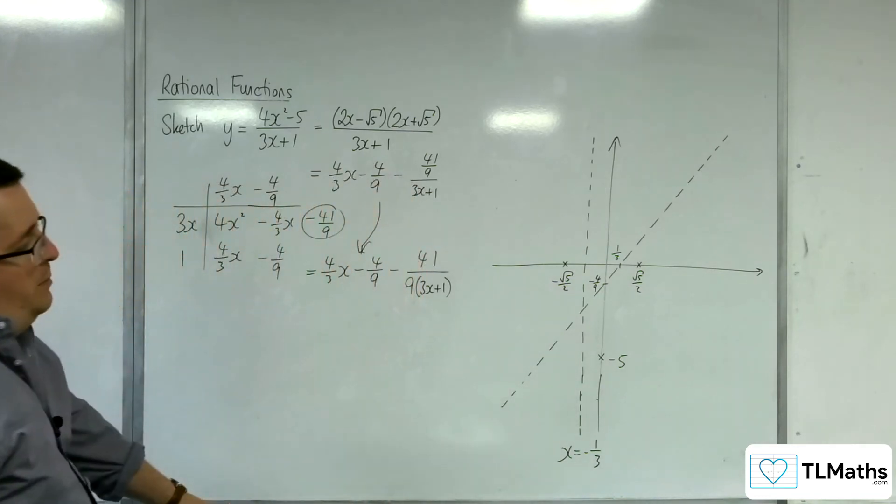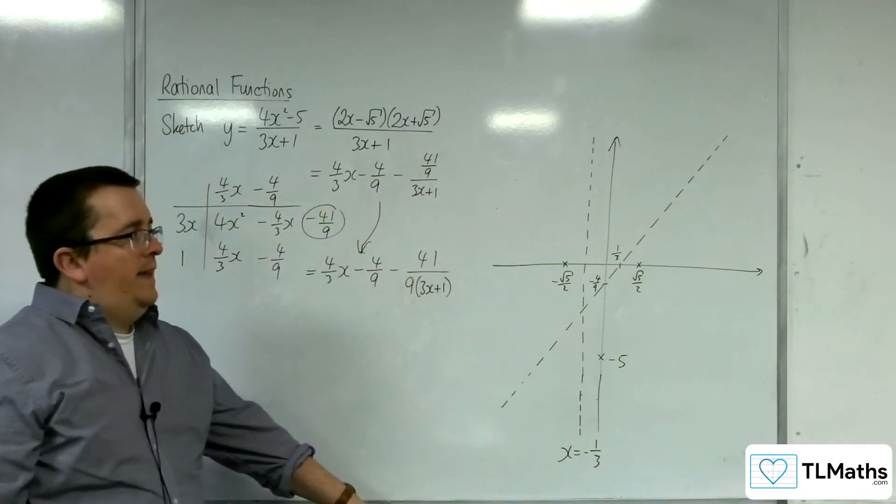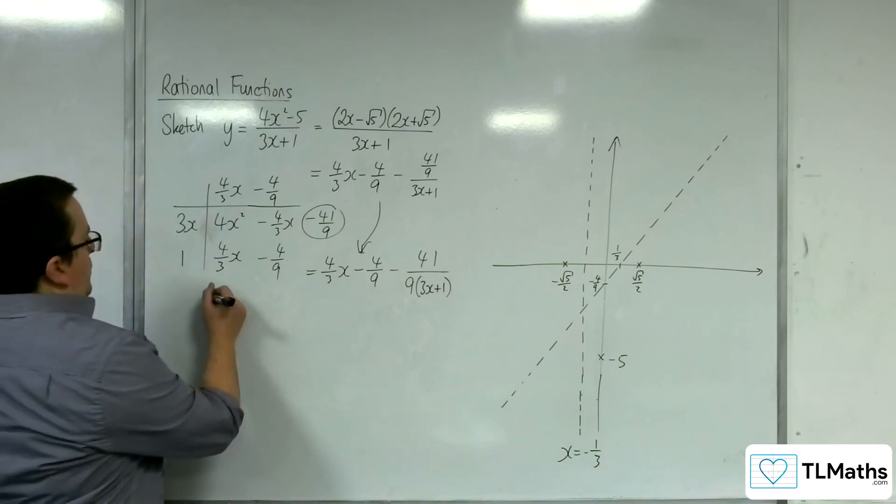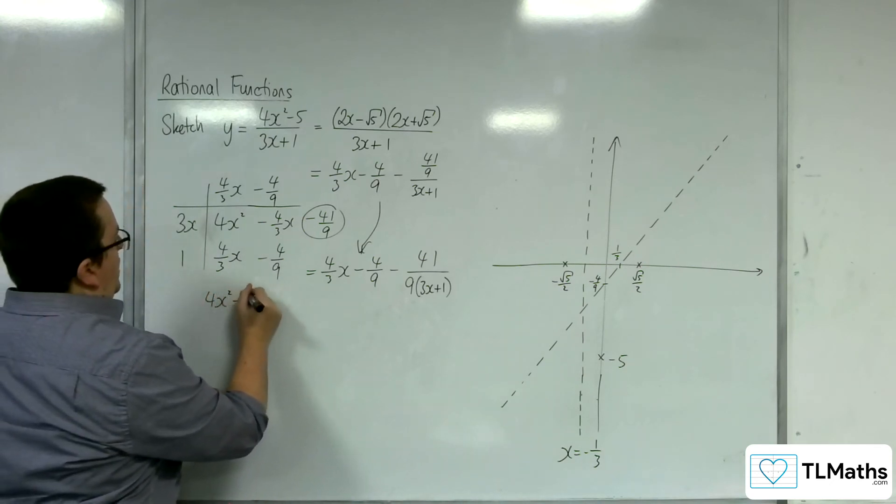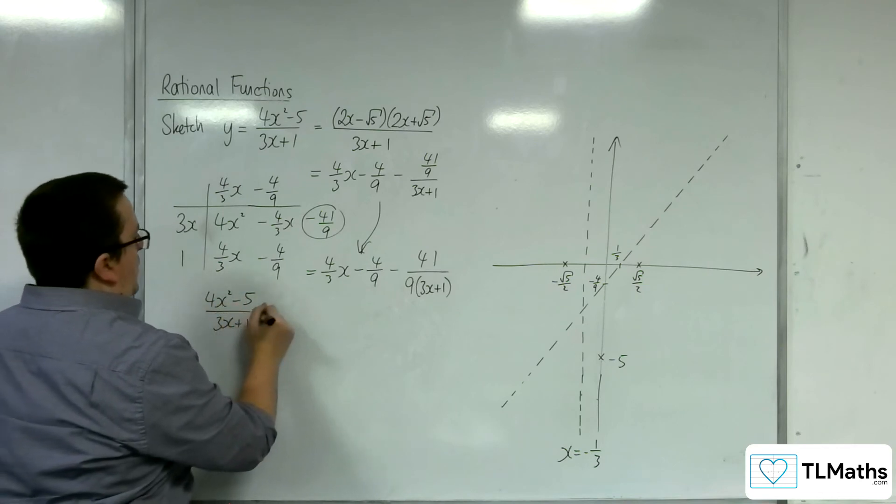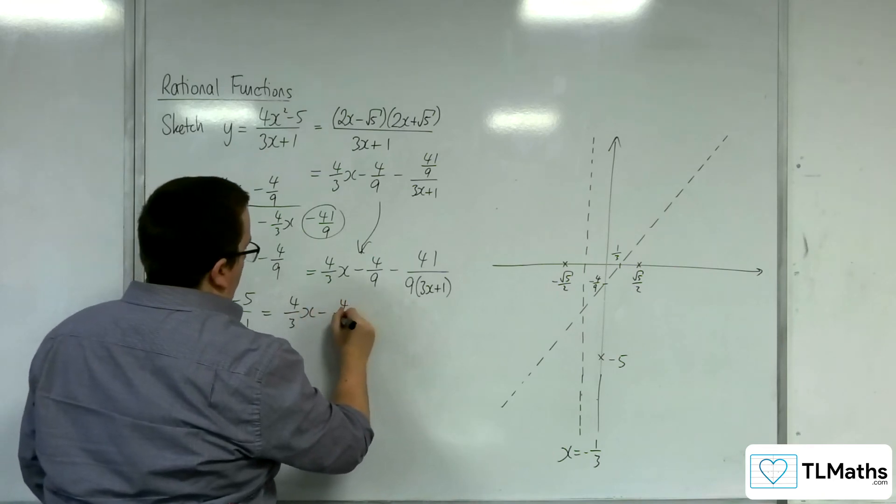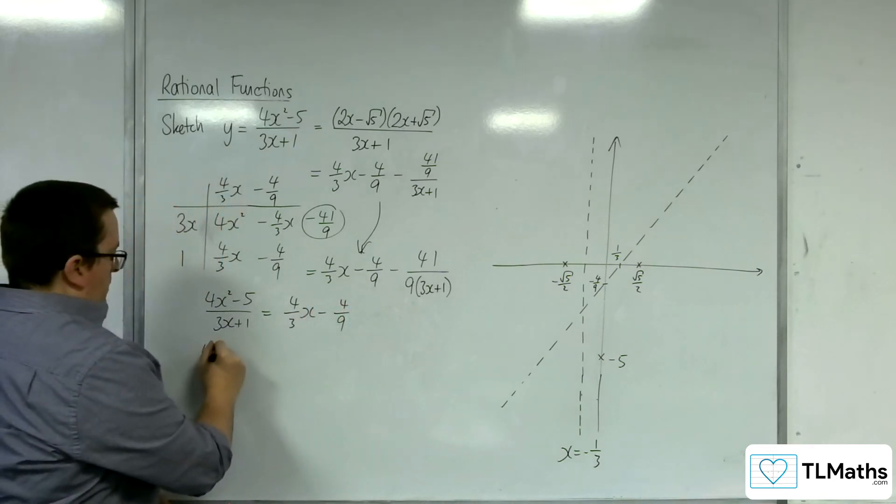So now we're going to just double check whether the curve and the oblique asymptote intersect. So we're going to put the 4x squared, take away 5 over 3x plus 1, equal to the 4 thirds x, take away 4 ninths.